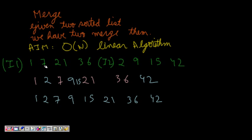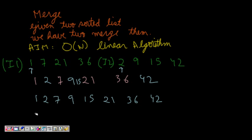I will think aloud. I will start with the first array and use an auxiliary array to store results. I will start from the first element of both arrays and compare which one is smaller. I find that 1 is smaller, so I put it as the first element of the auxiliary array. Next, I move to the next element of that array.